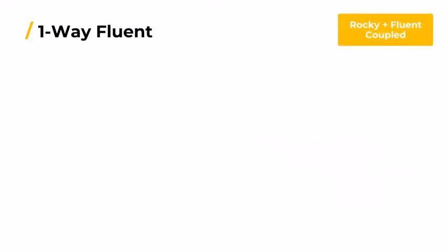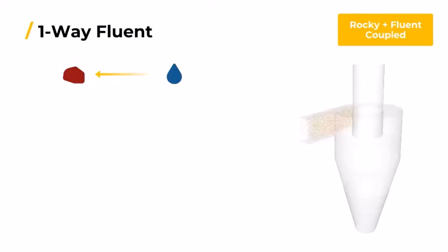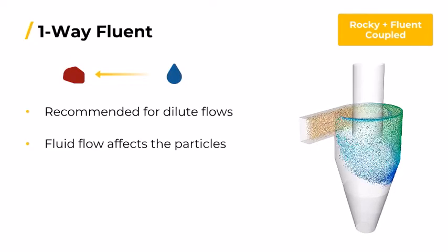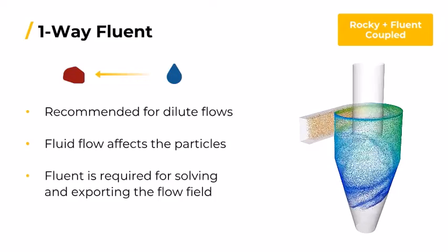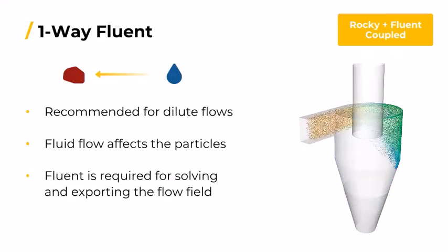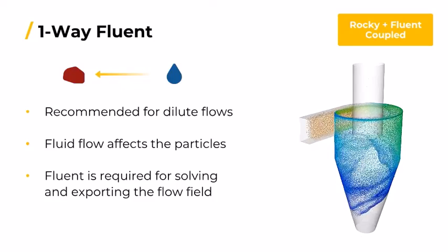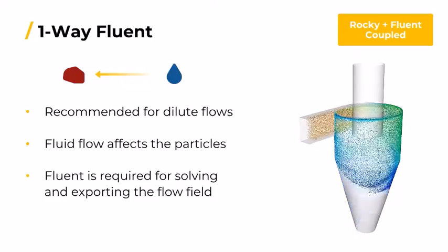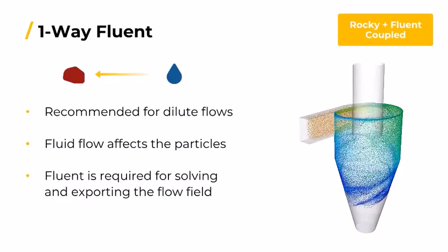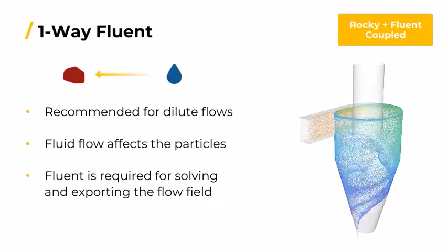In one-way Fluent, we have a method accomplished by coupling with ANSYS Fluent. The flow properties throughout the equipment being studied, such as velocity and pressure, will be computed by Fluent and exported to a Rocky compatible format. This method is particularly useful for simulating the effect of water on the movement of particles through a pipe, for example. With the one-way Fluent method it is not necessary to have both Rocky and Fluent installed on the same machine.